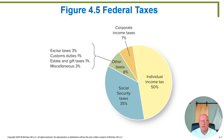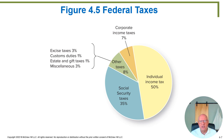Looking at federal taxes themselves — just federal, not state and local — from this pie chart, the individual income tax makes up 50% of all government tax revenue. The Social Security tax makes up 35%. Between income tax and Social Security tax, that's 85% of all taxes paid at the federal level. Corporate income taxes make up only 7% because corporate income is dramatically smaller than individual income. All other taxes — excise taxes, custom duties, estate and gift taxes, and miscellaneous taxes — add up to about 8% of total federal tax revenue.